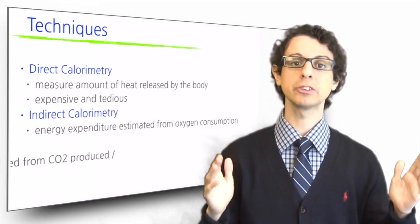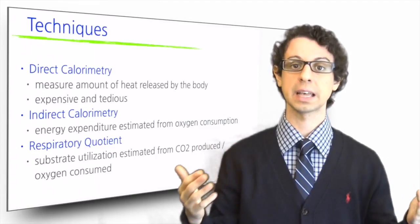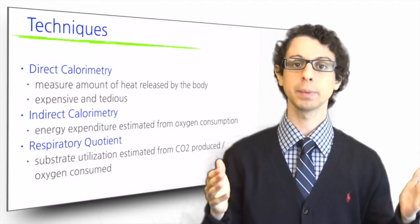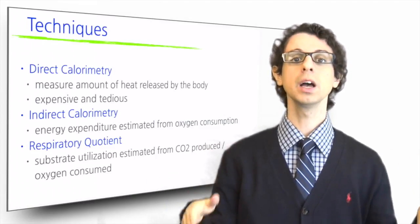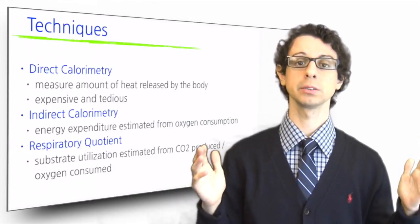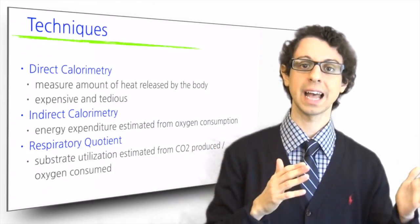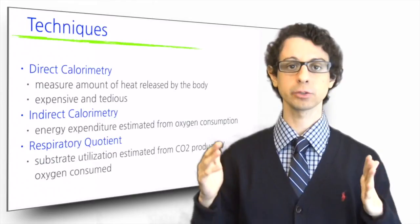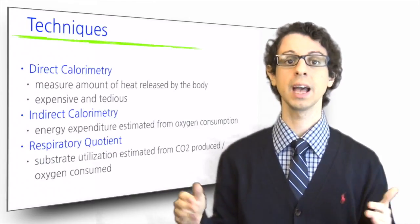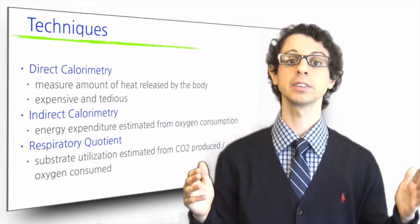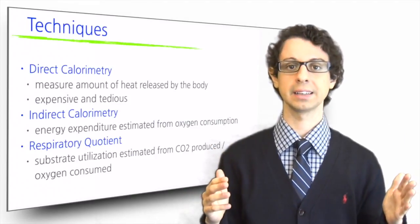If you also measure how much carbon dioxide is produced during the same activity and divide it by the amount of oxygen that was consumed, you can also estimate substrate utilization—that is, how much of that energy came from carbs, how much from fats, and how much from proteins. And this calculation is called respiratory quotient, and it's another fairly easy test.